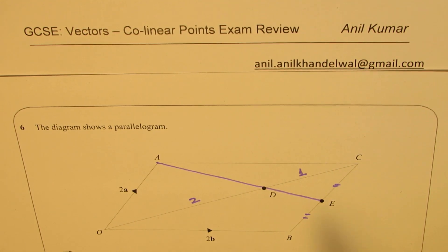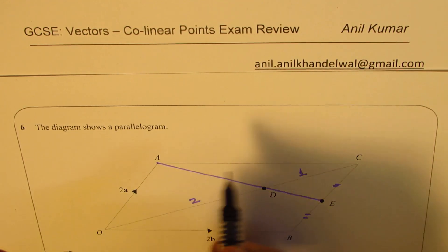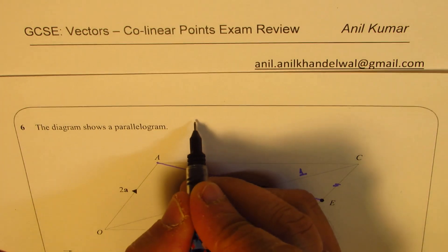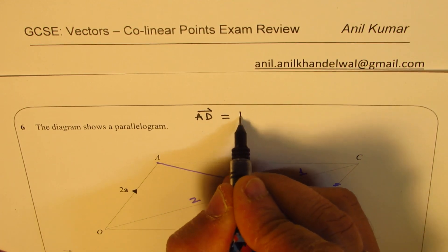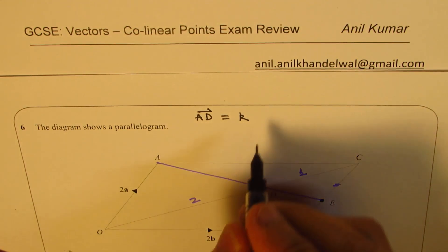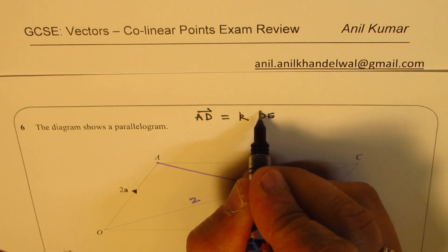Now the basic concept is that these vectors will be collinear if AD and DE are scalar multiples. So that is what we are interested in finding. So we'll try to figure out what is AD and we'll also find DE. So for collinear, I have to show that AD is a scalar multiple of vector DE. That is the concept.